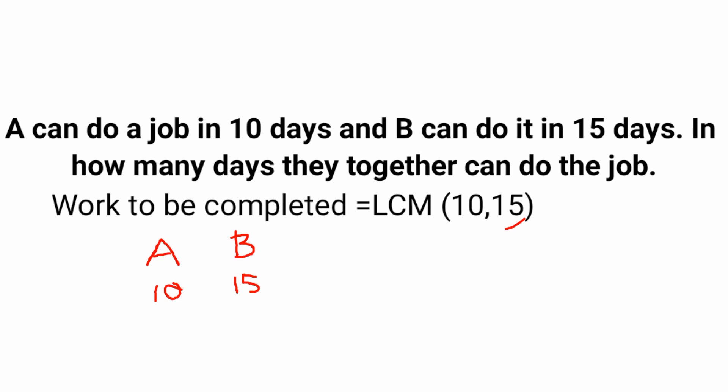To find the LCM, take the larger number — 15 — and check whether 15 is completely divisible by 10. It is not, so 15 is not the LCM. Take the next multiple of 15, which is 30. Check whether 30 is completely divisible by 10 — yes it is. So the LCM is 30, meaning the total work to be completed is 30.